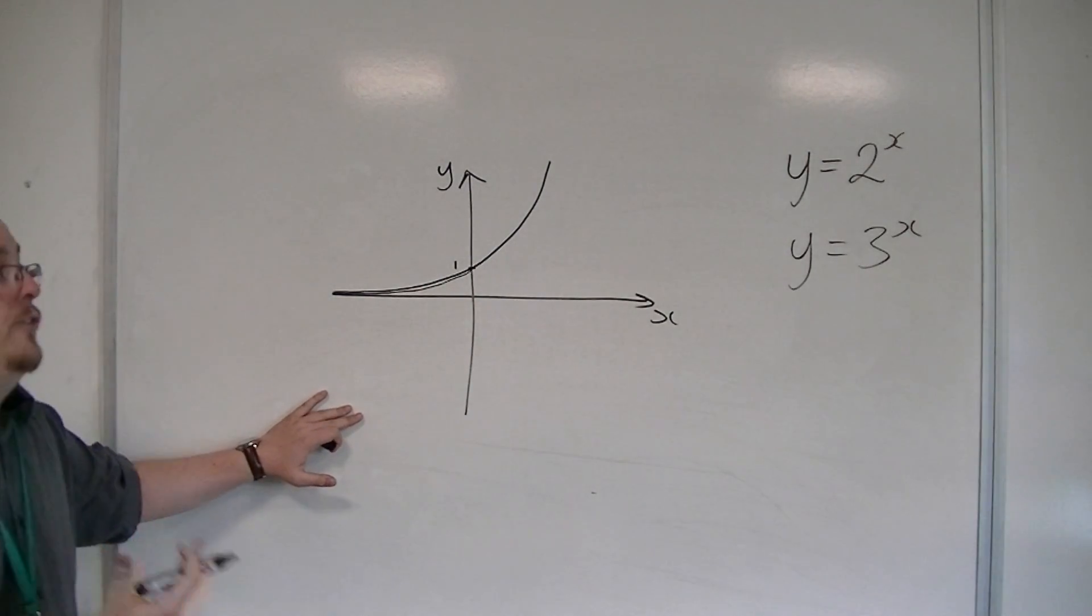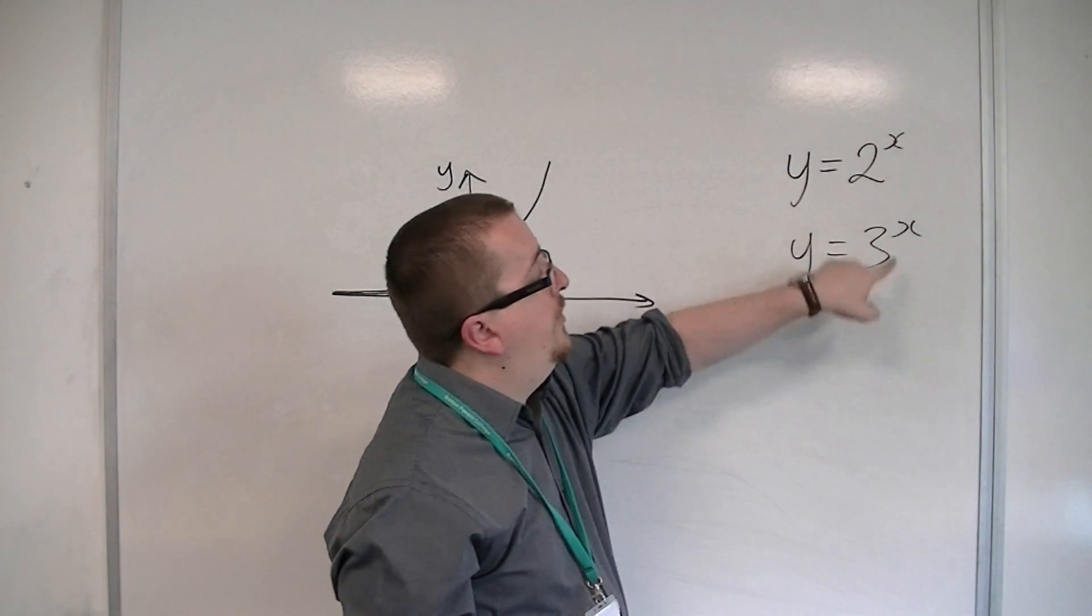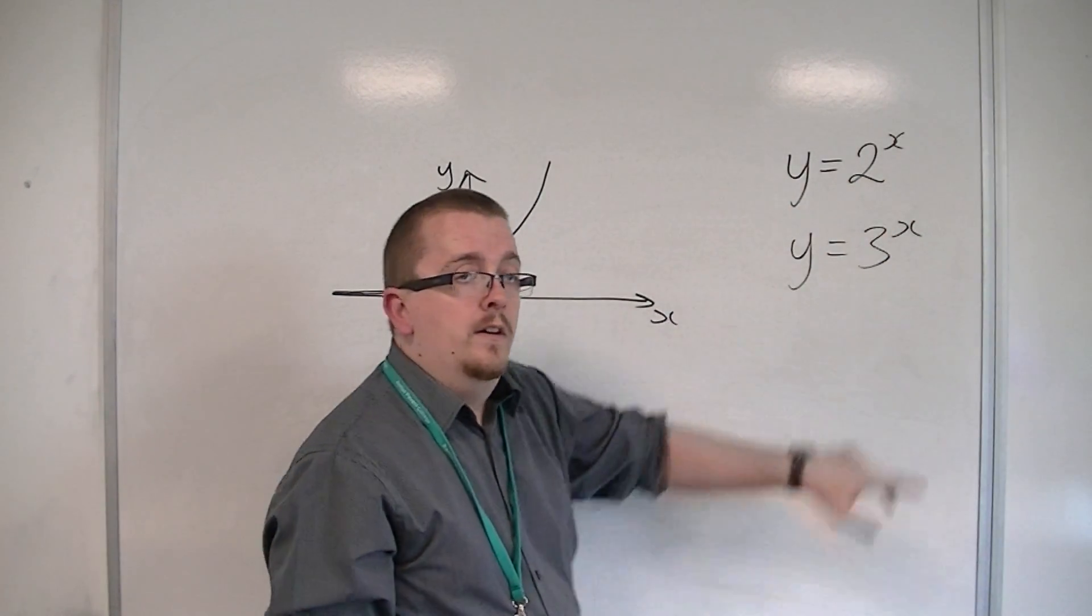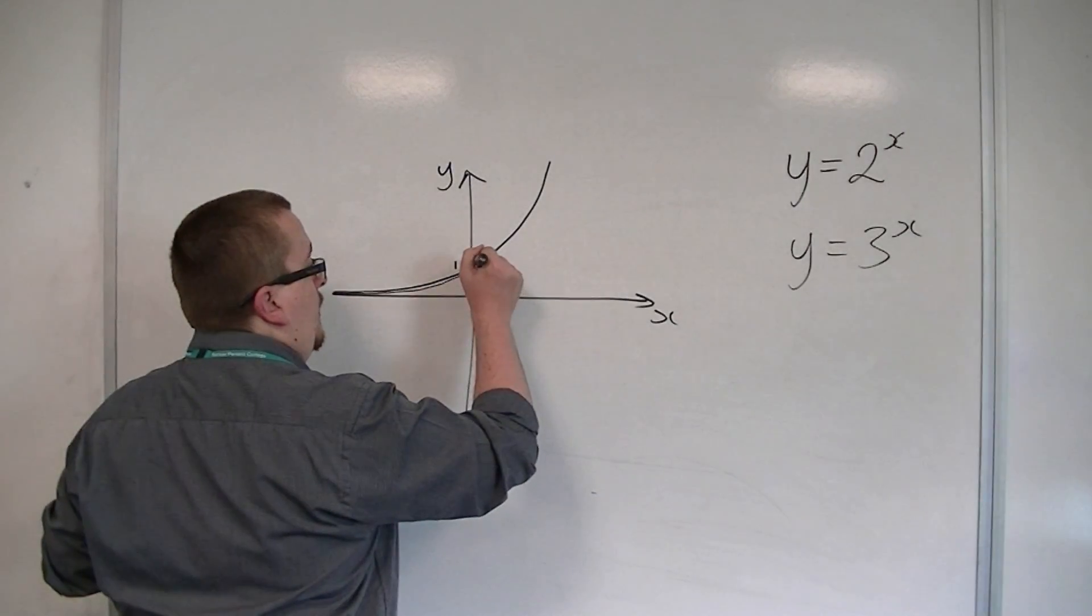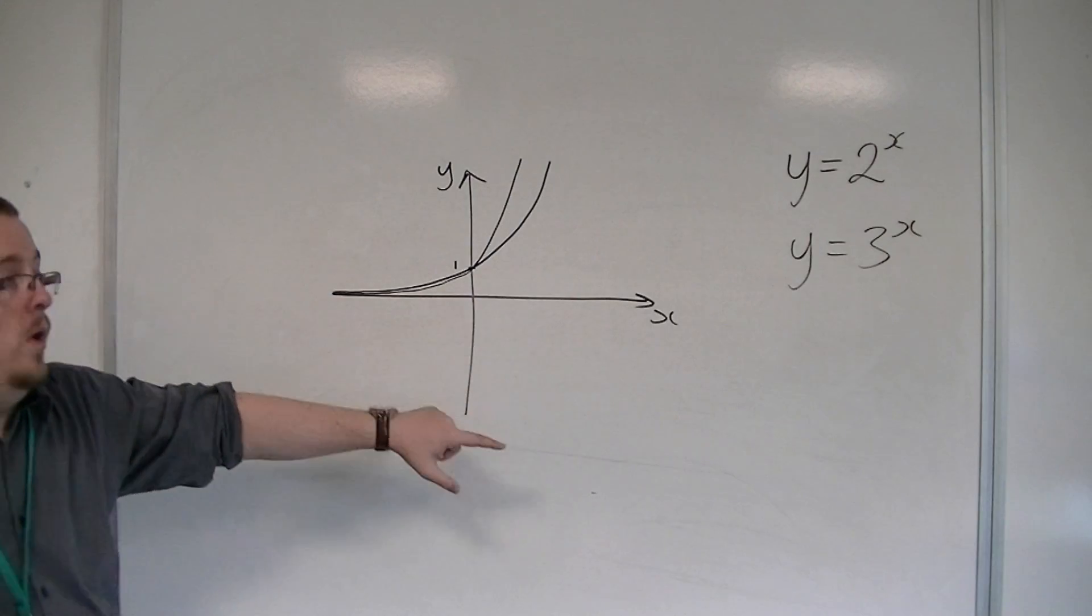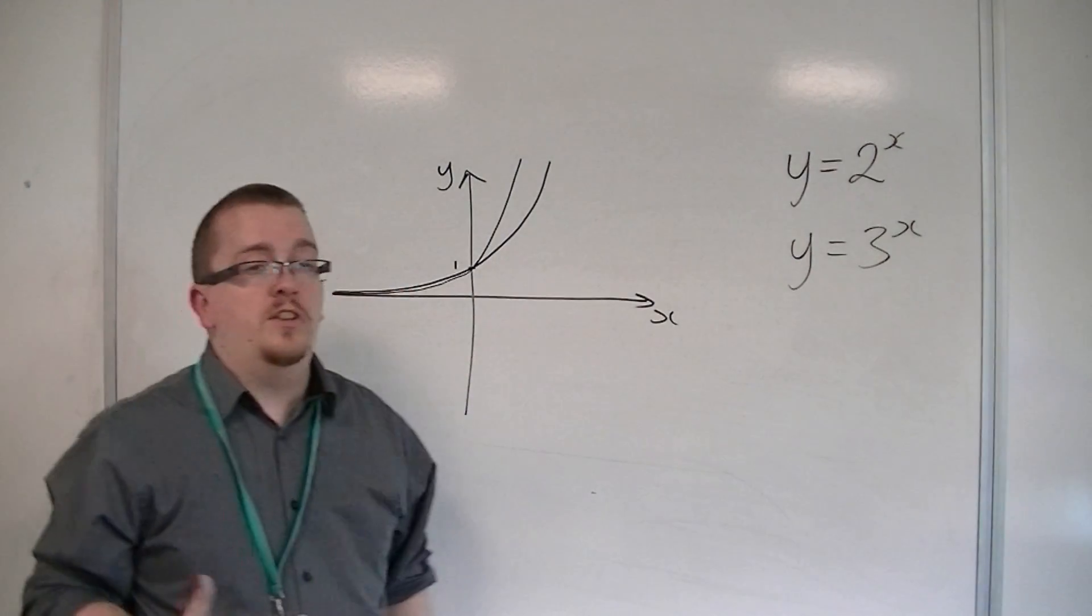it will increase faster, because when x is 1, we'll have 2 and 3. When x is 2, we'll have 4 and 9, and so on. And so it increases more quickly. And we'll go through (0, 1) in much the same way as y equals 2 to the x did.